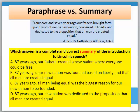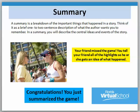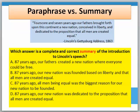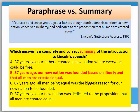Another example from the exam for paraphrase and summary is a multiple choice question: which answer is a complete and correct summary of the introduction of Lincoln's speech? A summary is a breakdown of the important things that happened in a story — think of it as a brief one to two sentence description of what the author wants you to remember. In a summary, you describe the central ideas and events. For example, your friend missed the game, so you tell them all the highlights. Congratulations, you just summarized the game. The correct answer is B, which includes an explanation of the main points that were covered and translated.